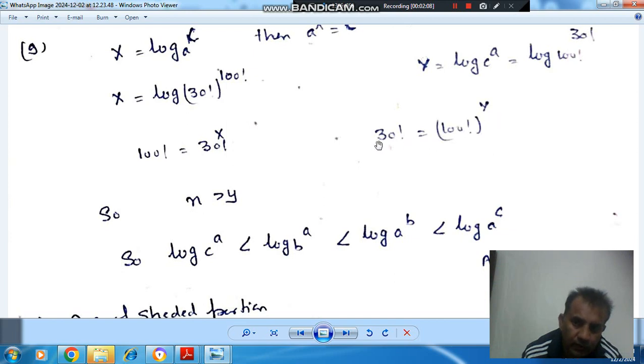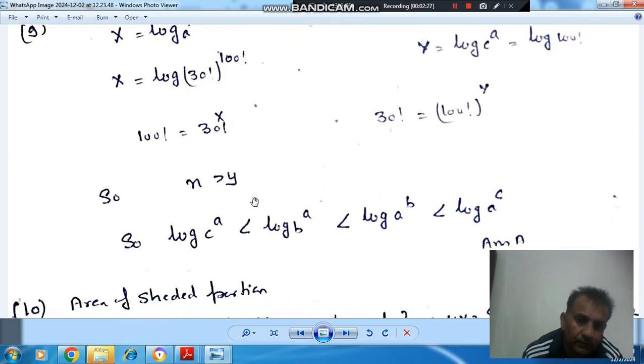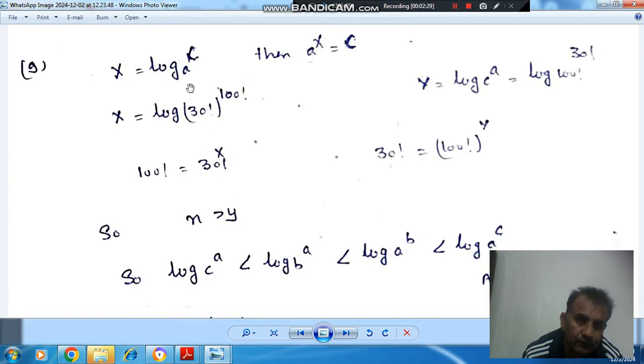So here we can see that 30 factorial to the power x will be equal to 100 factorial to the power y. So x will be equal to 30 factorial to the power y. So it means this quantity x is lower than this quantity y.